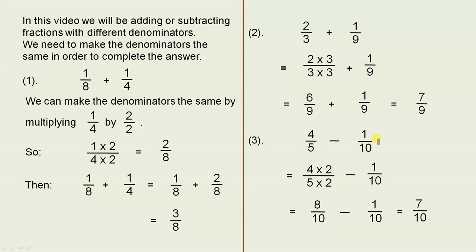4 over 5 minus 1 over 10. What do we have to multiply 5 by to give us 10? You multiply by 2. So we multiply by 2 over 2. That gives us 8 over 10 minus 1 over 10 is 7 over 10.